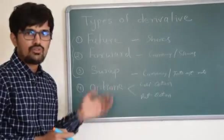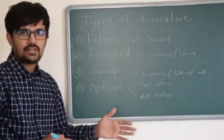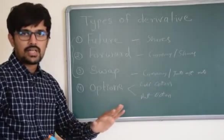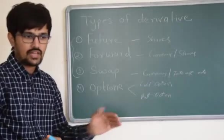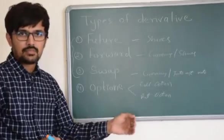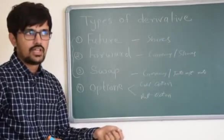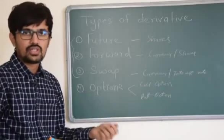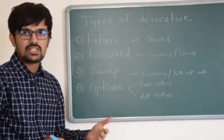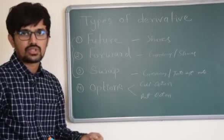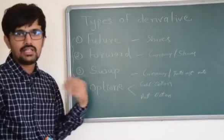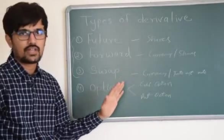I will enter into a forward contract with bank, by which I will say that look, whatever would be the market price at the end of year 2, I want to settle this loan at the price of say 65, because I assume that USD is going to gain over the period of 2 years. So then bank will charge me some premium for that amount. And then whatever would be the actual price at the end of 2 years, my liability is restricted to only 65 rupees.